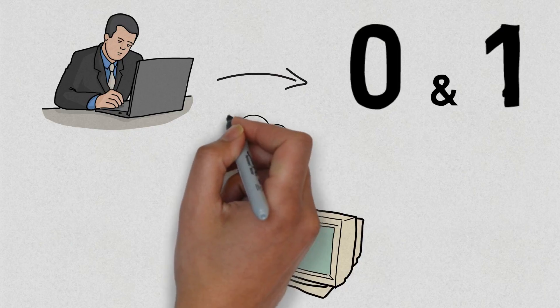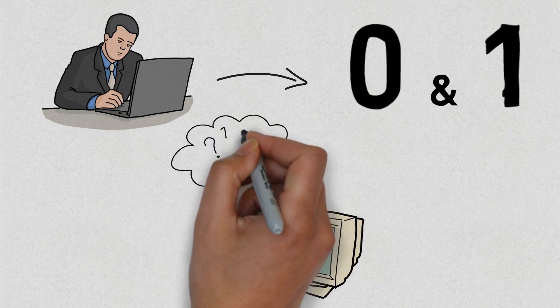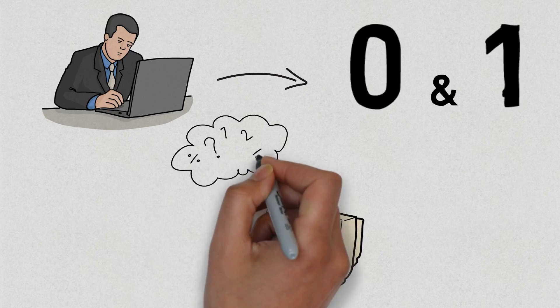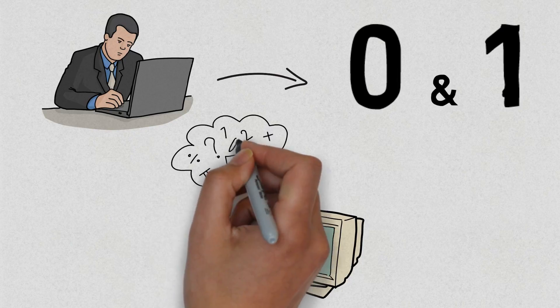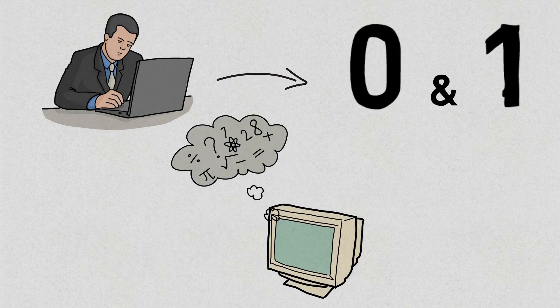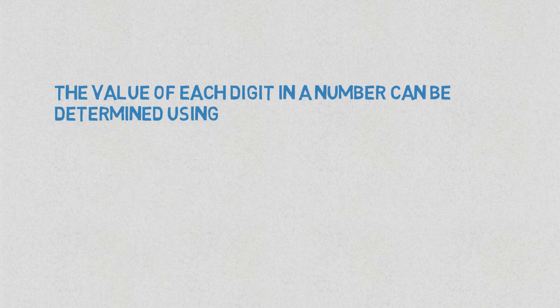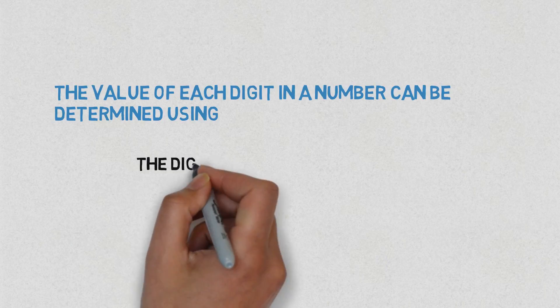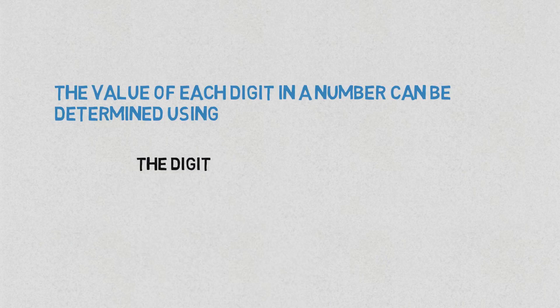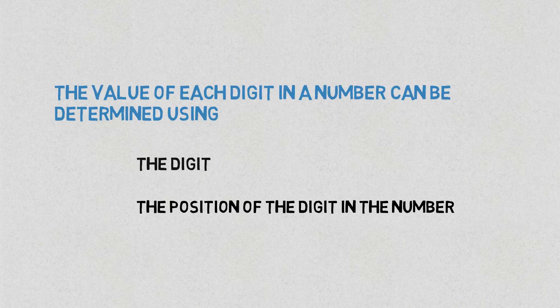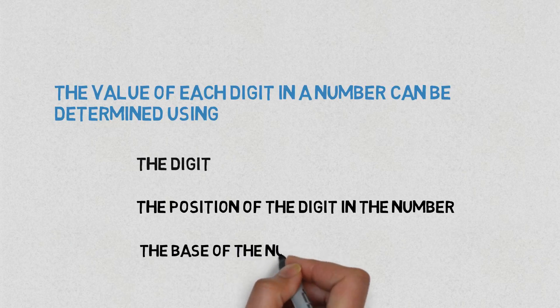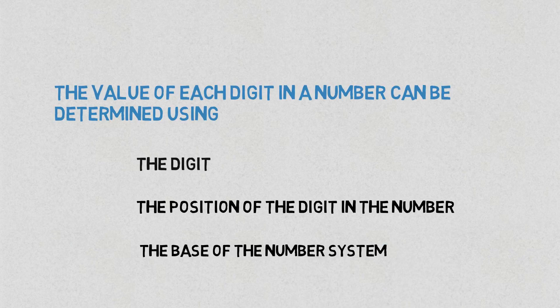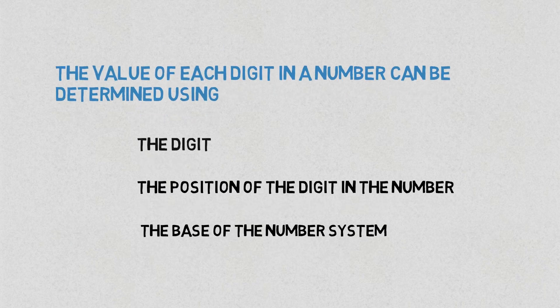A computer can understand the positional number system, where there are only a few symbols called digits, and these symbols represent different values depending on the position they occupy in the number. The value of each digit in a number can be determined using: one, the digit; two, the position of the digit in the number; and three, the base of the number system. These are the three main things considered for a number to be understood by the computer.